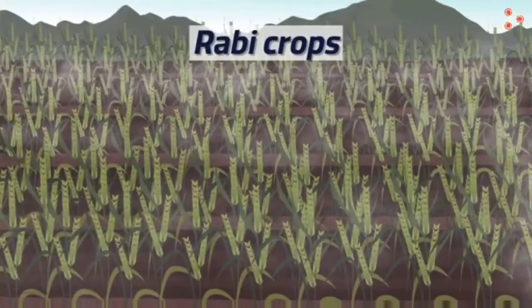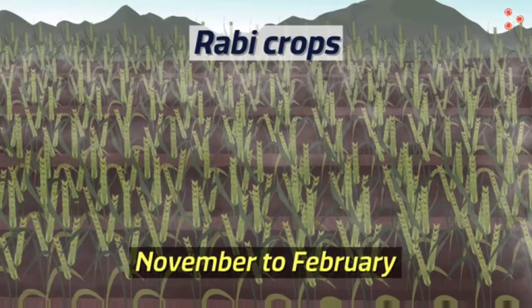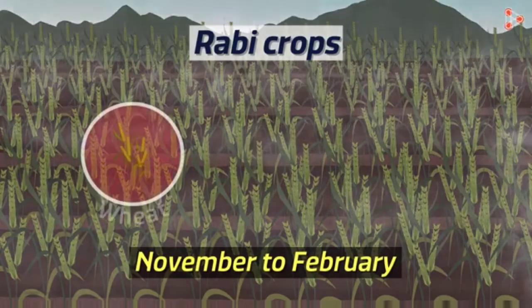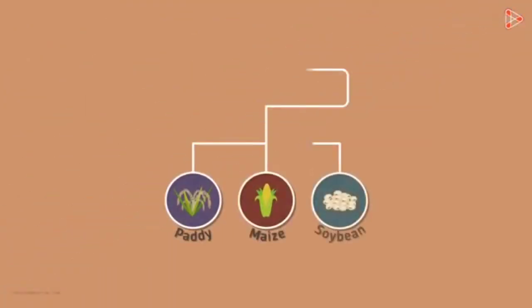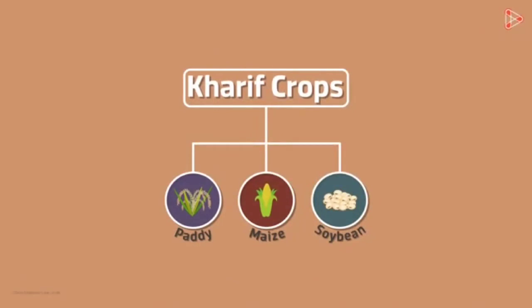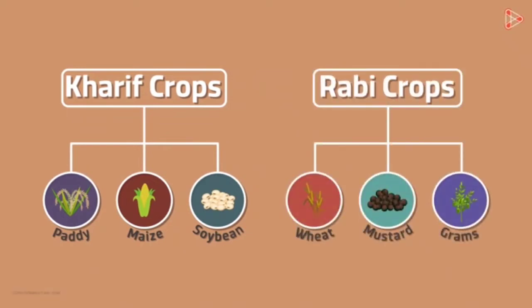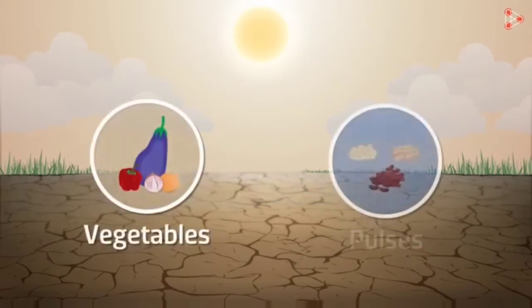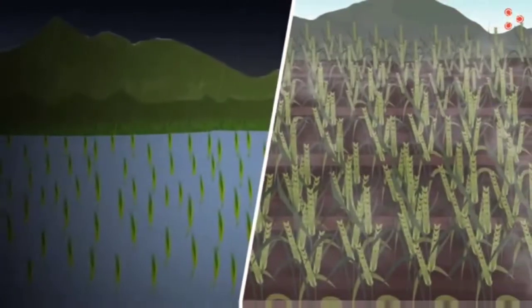Winter months in India begin in November and extend till February. Crops suited to this climate include wheat, mustard, and grams. So paddy, maize, and soybean are Kharif crops, while wheat, mustard, and grams are Rabi crops. Summer months usually do not see a lot of cultivation, but some vegetables and pulses can be grown in summer with the help of irrigation. This is all about the types of crop seasons in India.